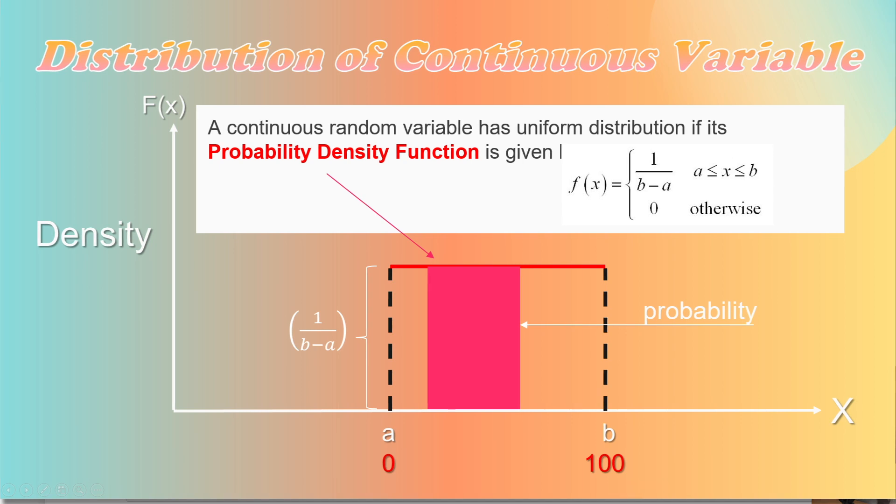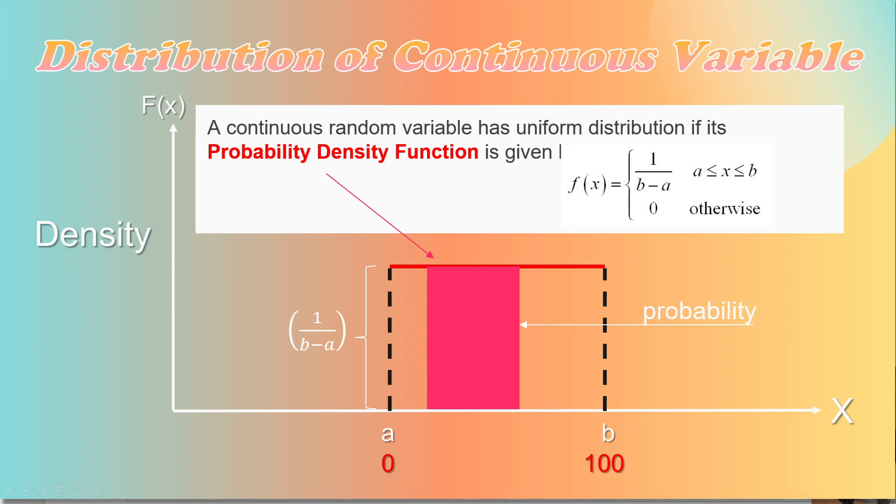This kind of variable takes possible values with equal chance in a certain range. Here is a distribution graph for a uniform random variable that takes values between 0 and 100 with equal chance. The height of the red line is not a probability.